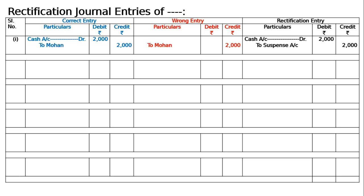The second entry: the balance in the books of Mr. Rahim, 1000, has been written off as bad debt, but no other account was debited — only Rahim's account was written off. All bad debts are expenses and losses. The correct entry is: Bad Debts account debited to Rahim. However, no other account was debited, meaning only the credit to Rahim was recorded — that is the wrong entry.